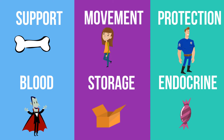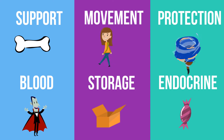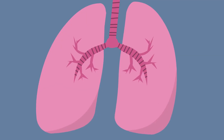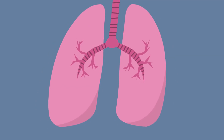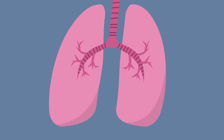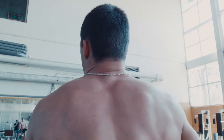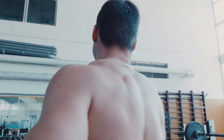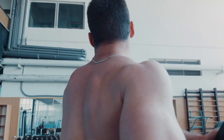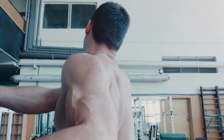Our bones give us structure. For example, without the structure of our bones, our lungs would collapse. Our bones also work with the muscular system to help us move.